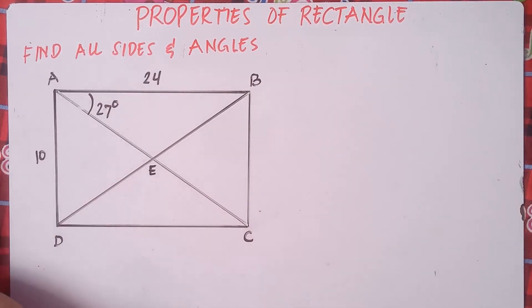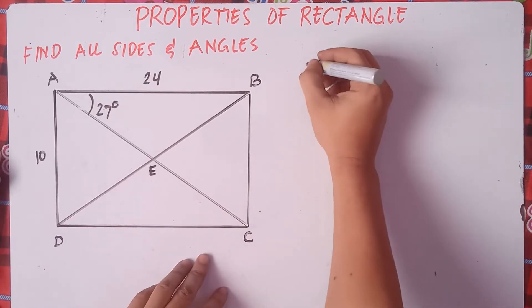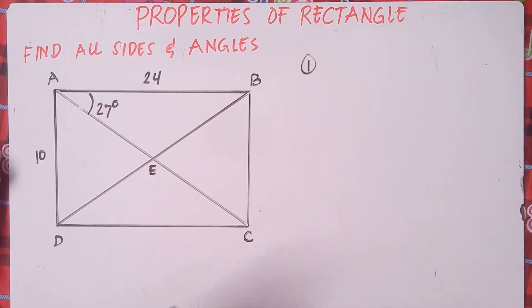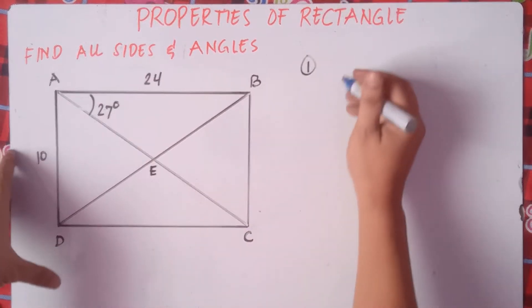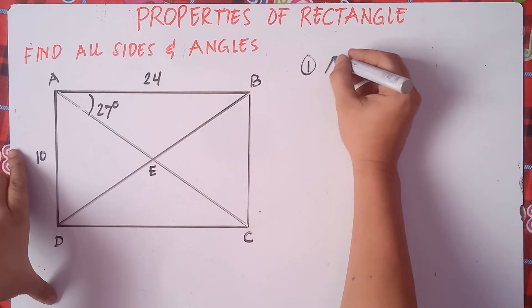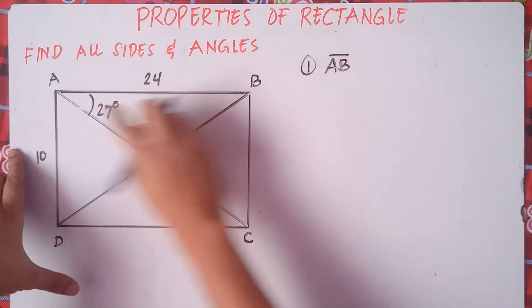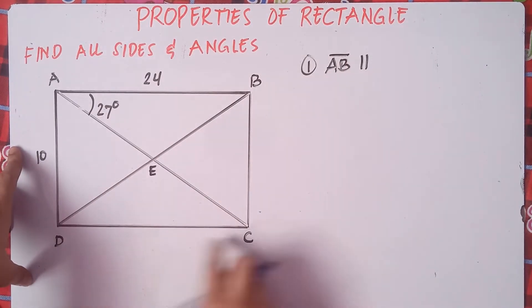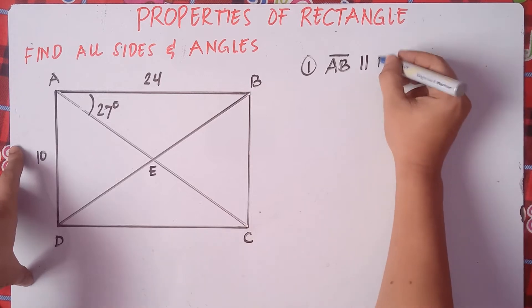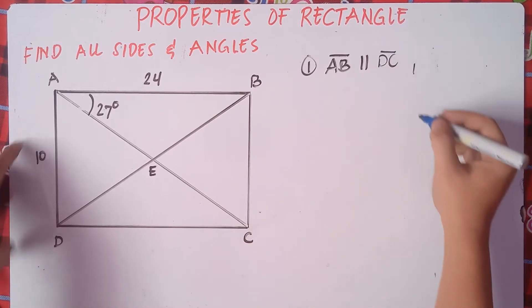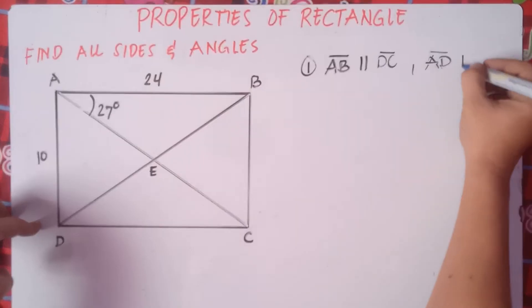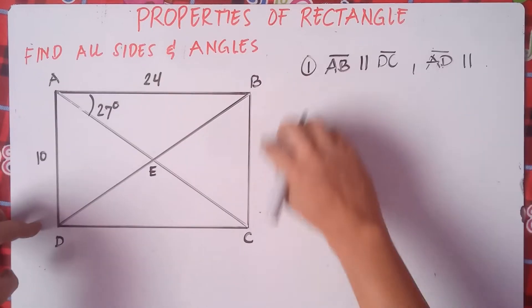Alright, so the properties of a rectangle. The first property says that two sides are parallel. Therefore, we can say that line AB is parallel to line DC, and line AD is parallel to line BC.